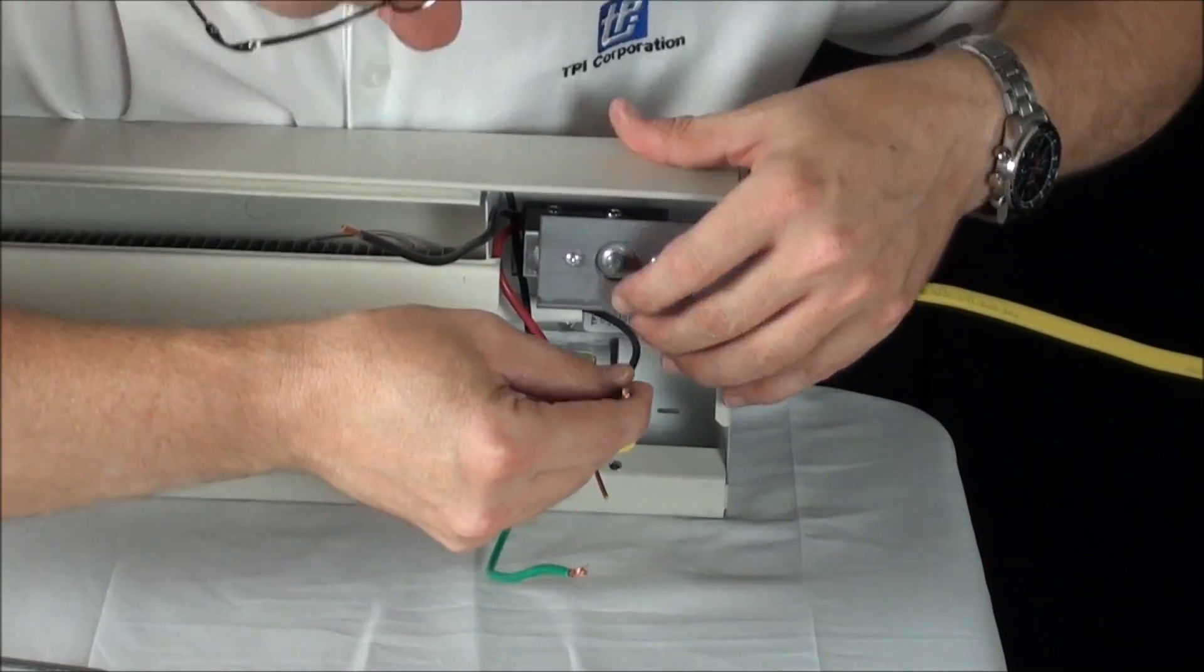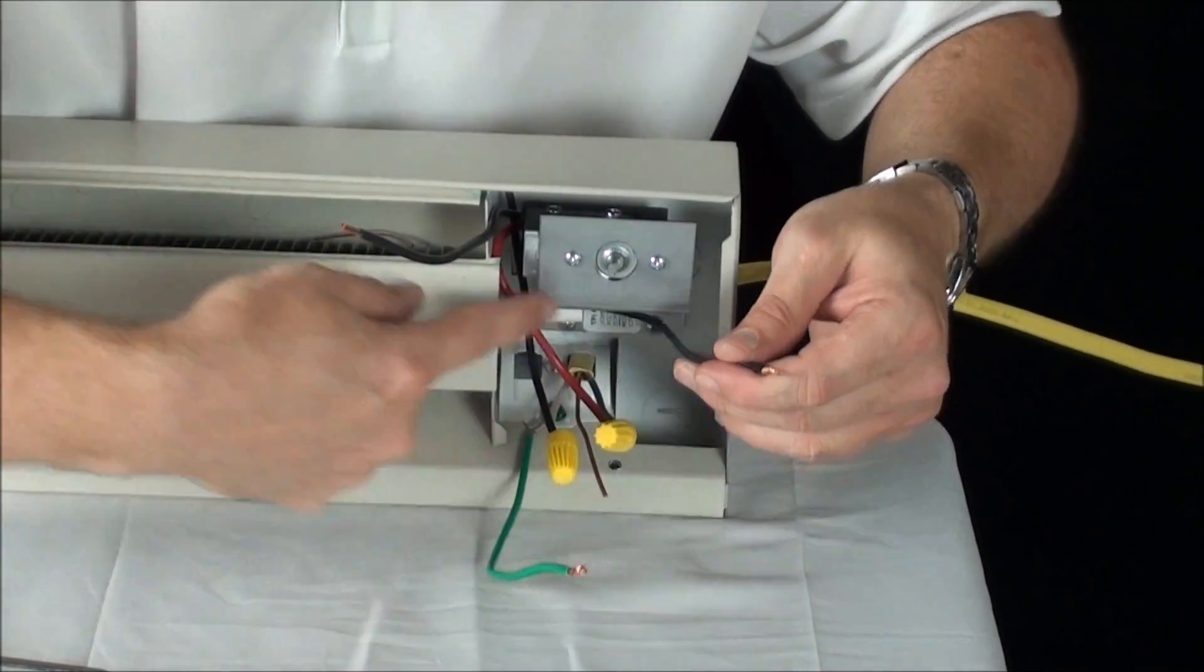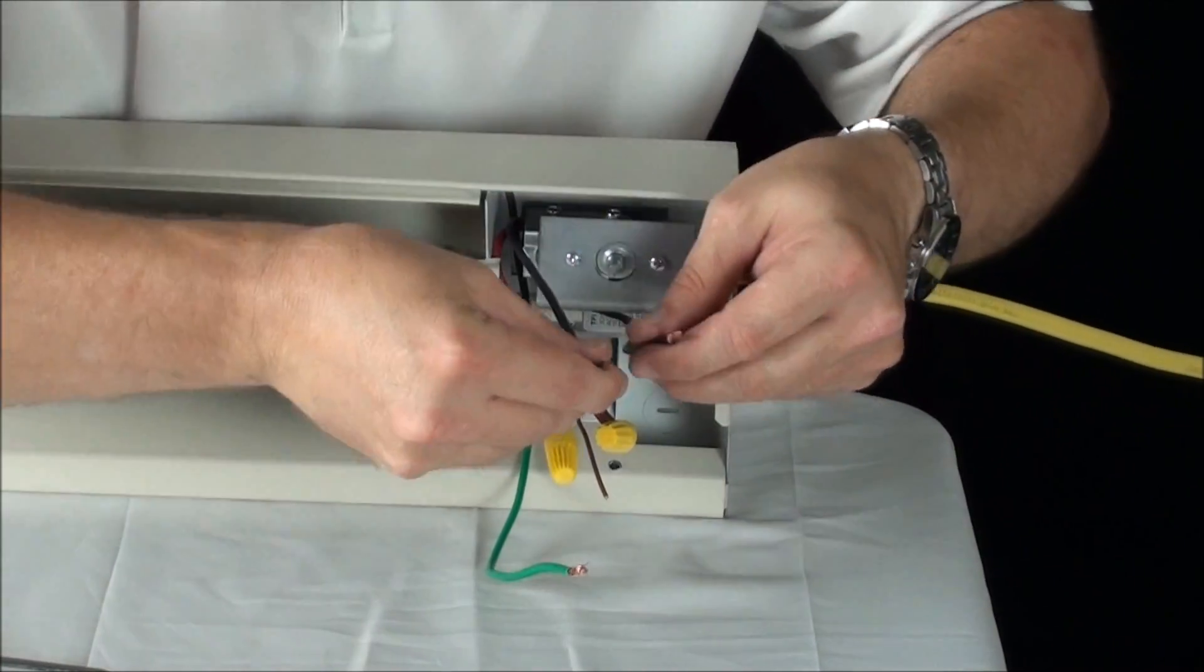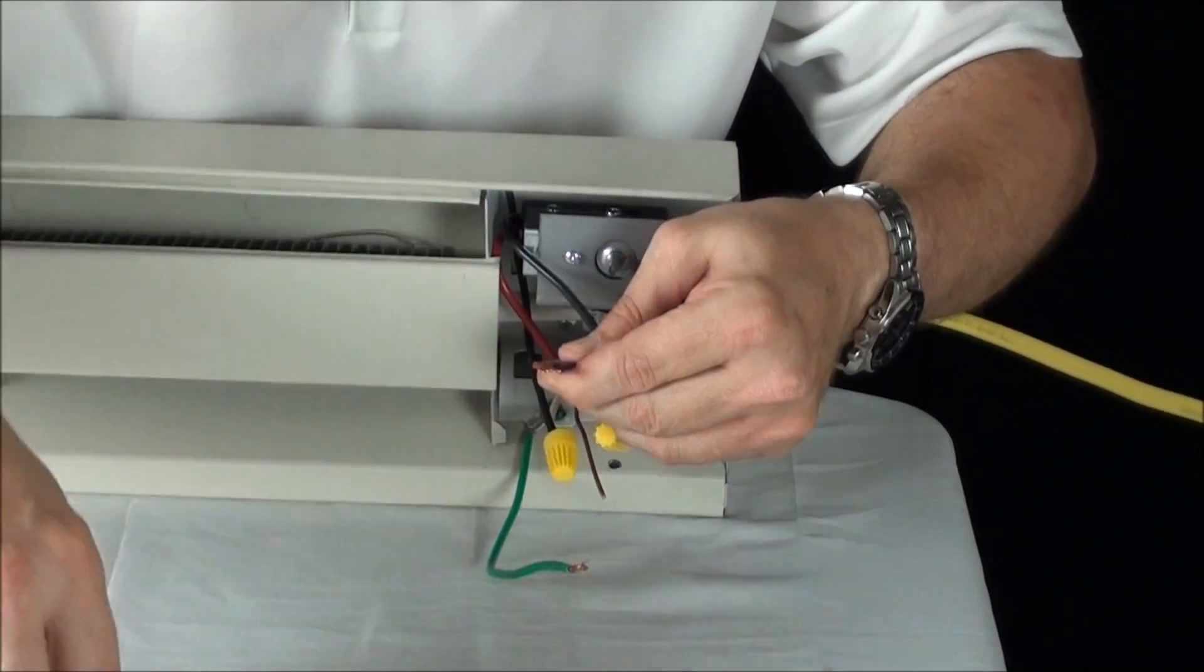You have two wires left: a black wire from your element and a black wire from your thermostat. Hook those two together.